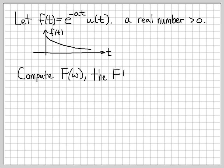Our goal here is to compute f of omega, which is the Fourier transform of f of t. So to start doing this, we are going to write down the definition of the Fourier transform. The definition of the Fourier transform is f of omega is an integral from minus infinity to infinity, f of t, e to the minus j omega t, dt.